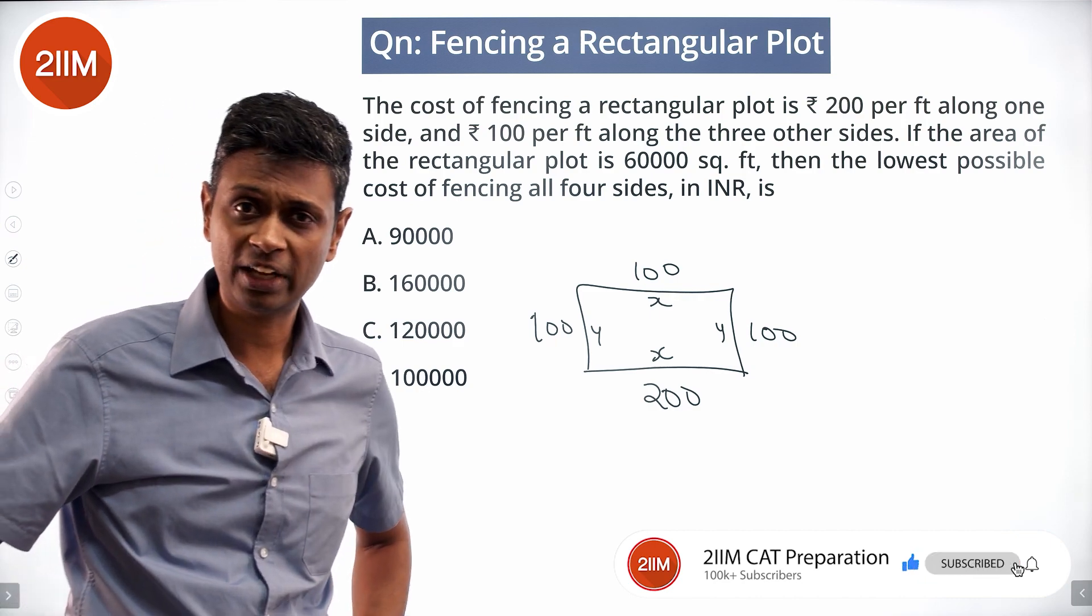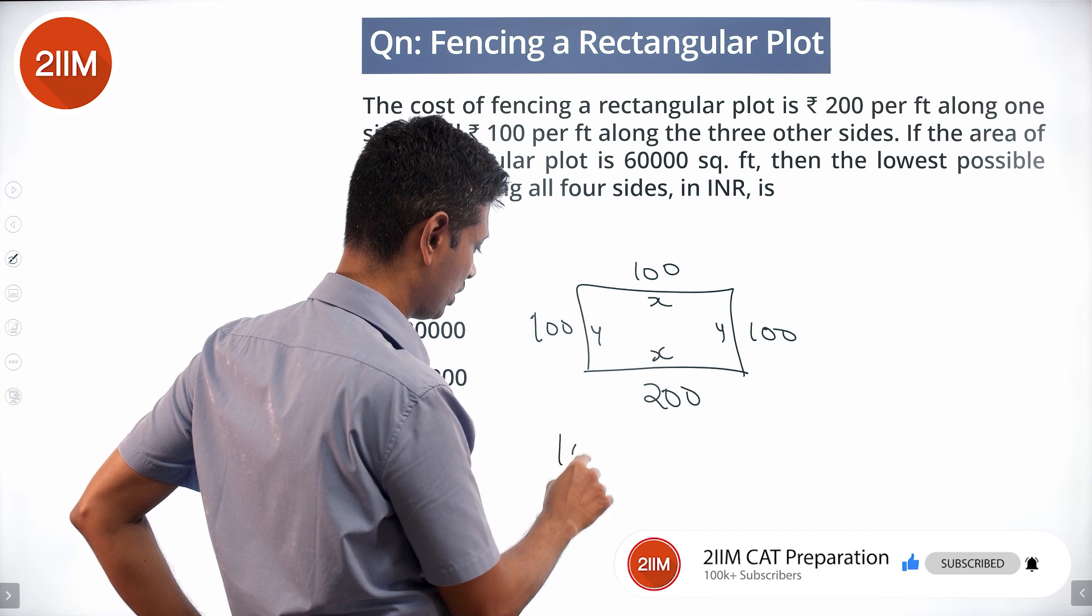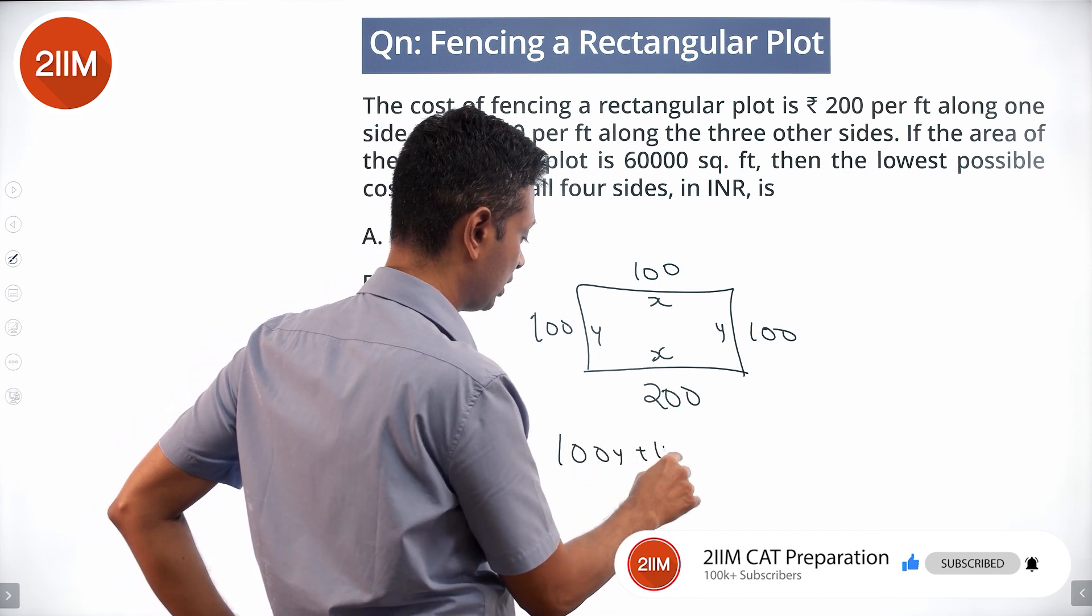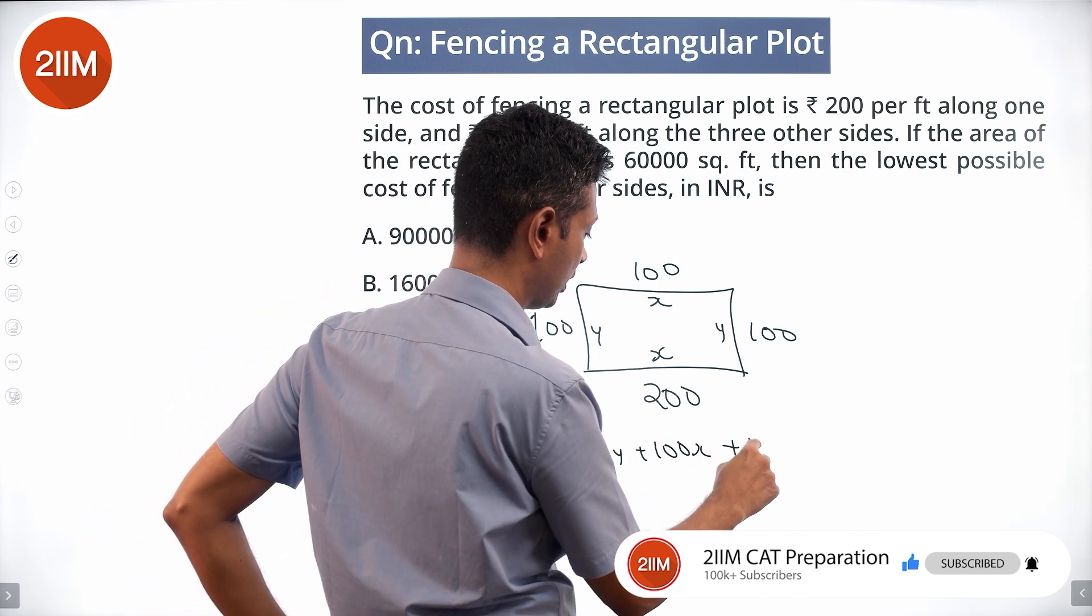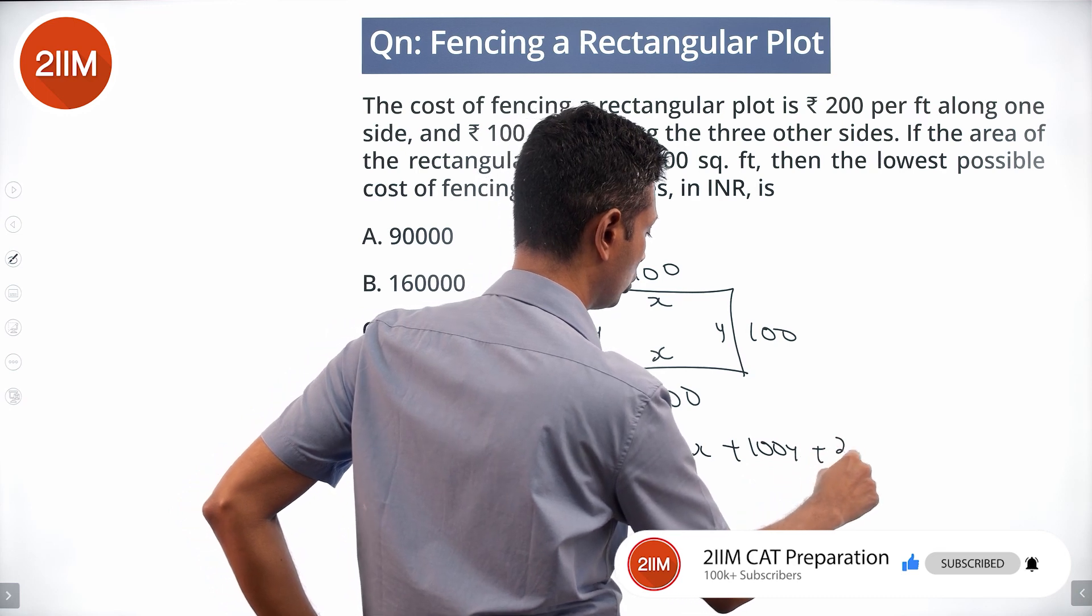The cost of fencing would be 100Y plus 100X plus 100Y plus 200X.